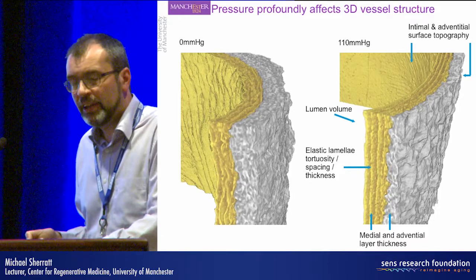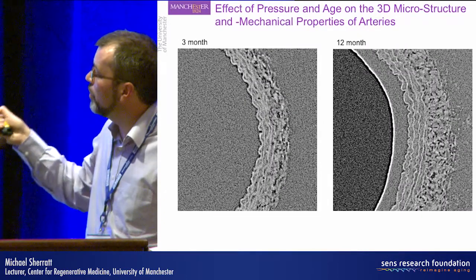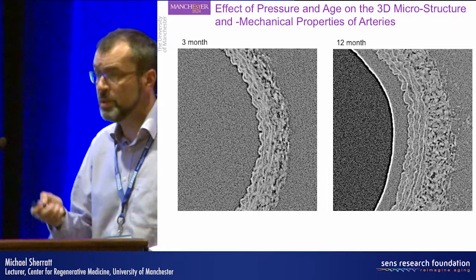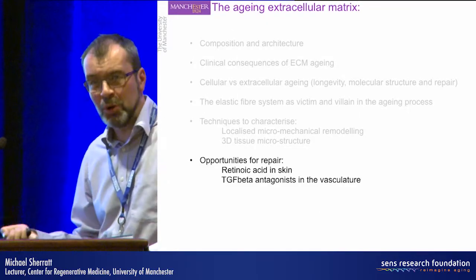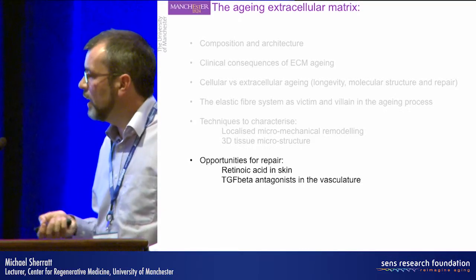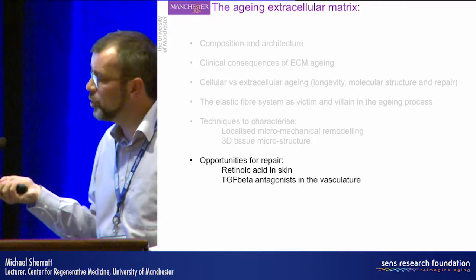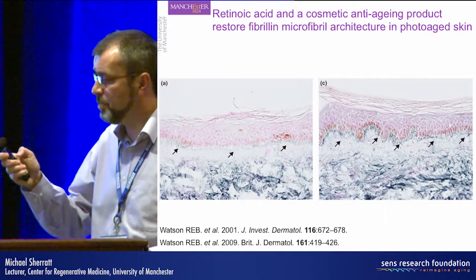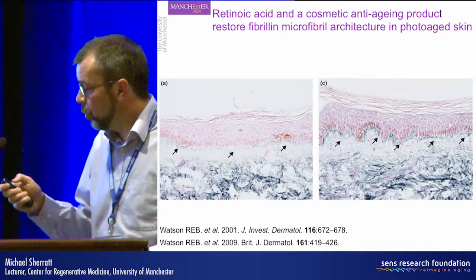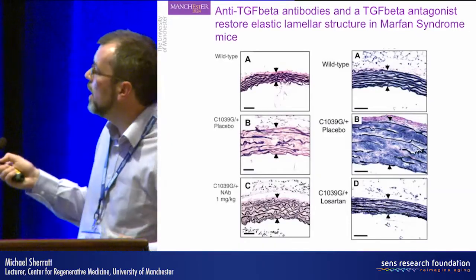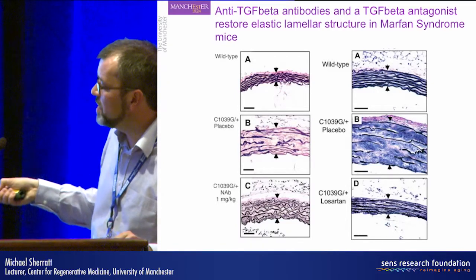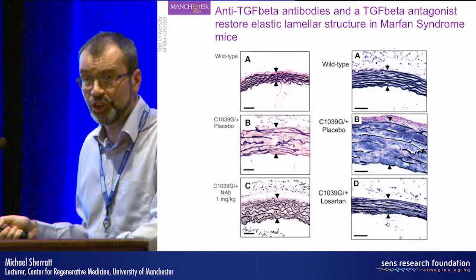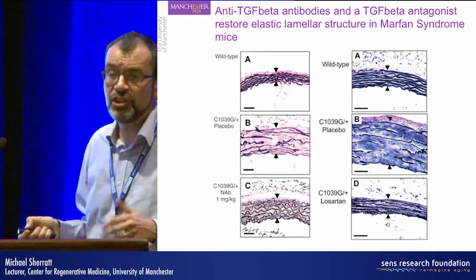Still at very early stages of analysis, but here are two slices from a three-month and a 12-month-old aorta, showing considerable hypertrophy in the 12-month compared to the three-month. On a hopeful note, there is evidence for remodeling of elastic fibers. Colleagues Professor Chris Griffiths and Rachel Watson demonstrated, using retinoic acid and a commercial anti-aging product, restoration of fibrillin microfibrils at the dermal-epidermal junction of photo-aged skin. Habashi and colleagues, published in Science, showed that in a mouse model of Marfan syndrome, treatment with an anti-TGF-beta antibody or losartan, a TGF-beta antagonist, can prevent and partially restore vessel structure.